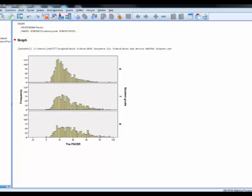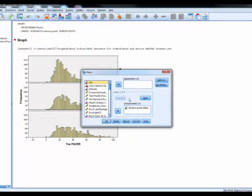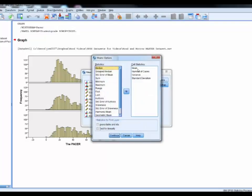So we'll go back to analyze, compare means, means. We'll put Pacer laps as the dependent variable. We'll look at that by student grades. For options we'll click on the mean, the number of cases.